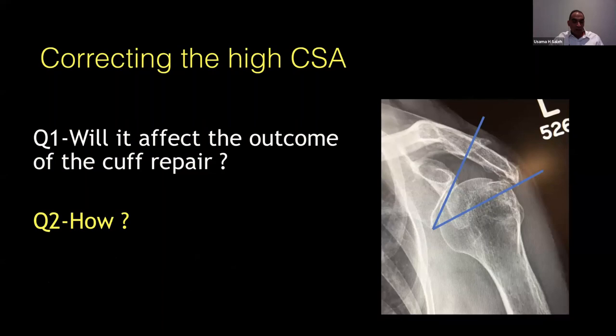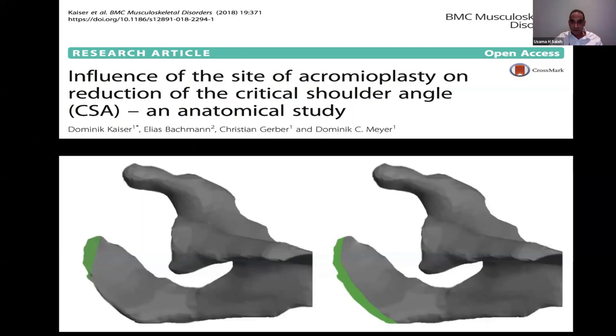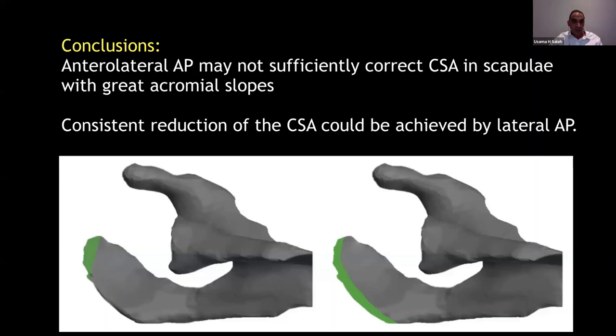How can we correct the critical shoulder angle? The glenoid inclination line cannot be changed — you cannot do a glenoid osteotomy. But you can modify the lateral acromion: by removing a portion via lateral acromioplasty, you shift the line and end up with a normal critical shoulder angle. The question is whether to go anterolateral or purely lateral. The Gerber group answered that consistent reduction of the critical shoulder angle is better achieved with lateral rather than anterolateral acromioplasty.